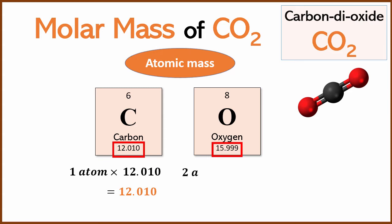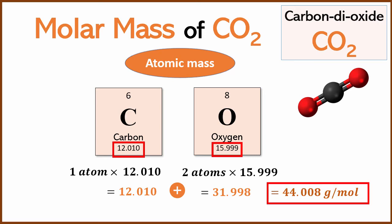Oxygen has two atoms, each weighing 15.999 atomic mass units, which gives you 31.998. If you add these together, you get 44.008 grams per mole. Grams per mole is the unit of molar mass. That is the molar mass of carbon dioxide.